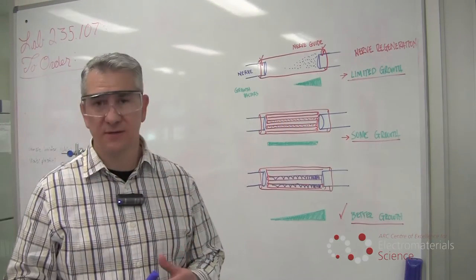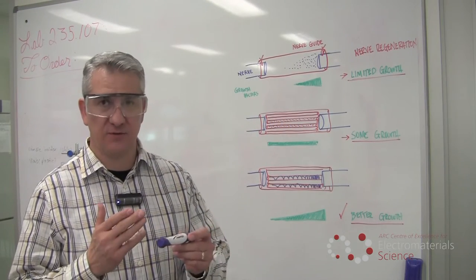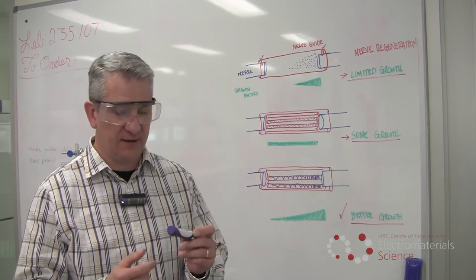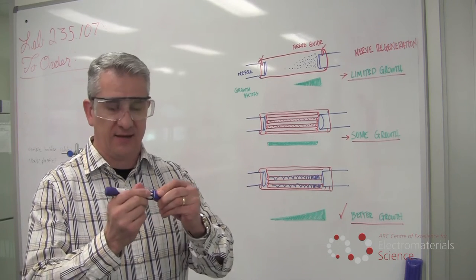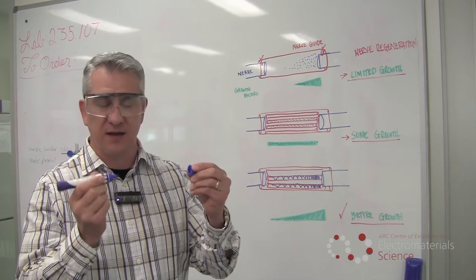When nerves are injured, either because we have a tumor or we have a direct impact or injury to the nerve, the nerve sometimes dies and it gets disconnected, resulting in a gap.